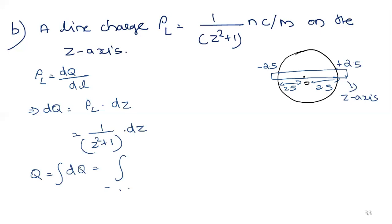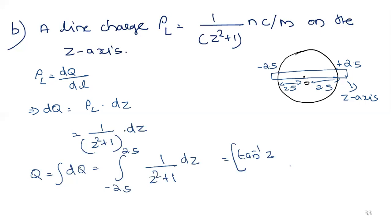The integral of one over (z squared plus one) dz is tan-inverse(z), which you have studied in mathematics. Evaluating from minus 2.5 to plus 2.5 gives a final answer of 2.381 nanocoulombs. Be familiar and friendly with your calculator to do these problems. I hope this problem is clear for you. Thank you.